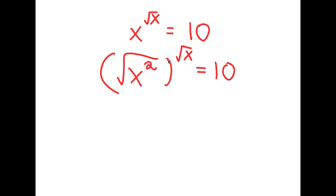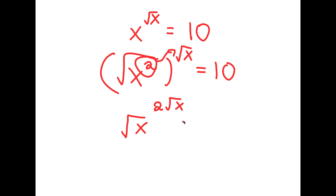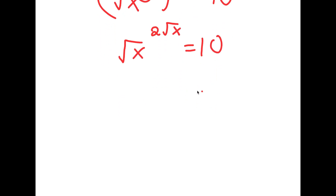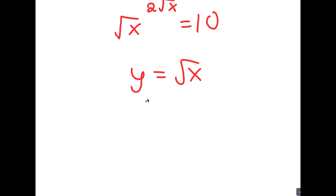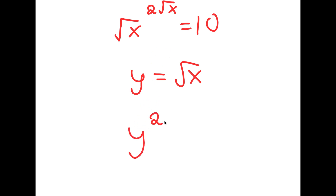This is the same thing as the square root of x to the power of 2 times the square root of x, so I can move this 2 over to the front. Now, if I let y equal the square root of x, I'm going to substitute y into my original equation. So I get y to the power of 2y is equal to 10.